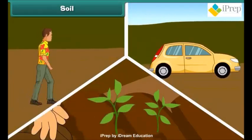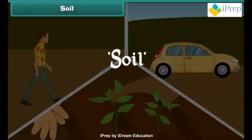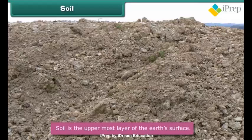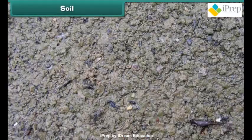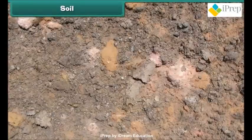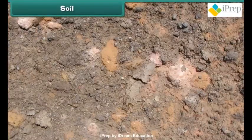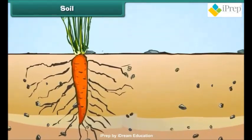It is everywhere — we walk on it, we drive on it, and we grow plants on it. Wondering what it is? It is soil. Soil is the uppermost layer of the earth's surface. It consists of a mixture of rock finely ground into powder, water, air, minerals, and a variety of living and dead life forms.